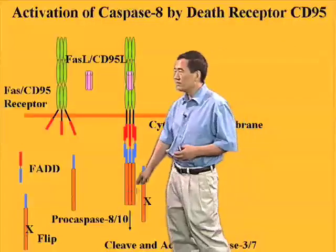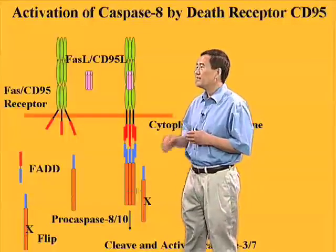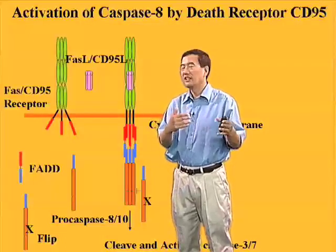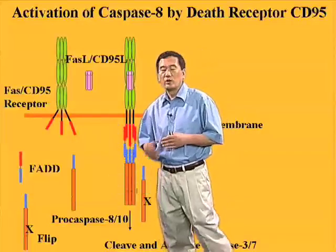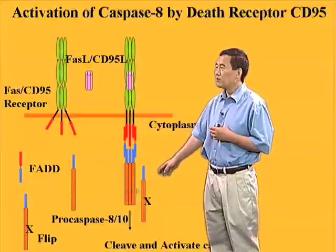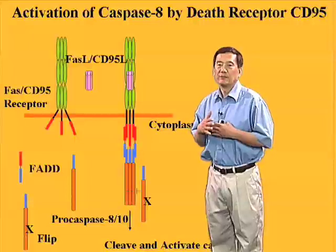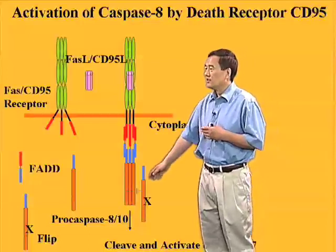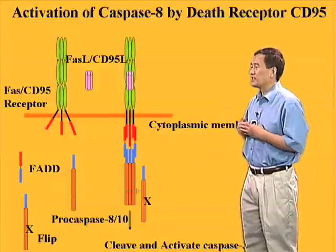There is one interesting regulator of the extrinsic pathway called FLIP. FLIP looks like caspase-8 — it also has a death-effector domain at its N-terminus and is homologous to caspase-8 — but the critical enzymatic site, the cysteine, is missing. So FLIP can be recruited to the DISC, but because it lacks an active site, it cannot function as caspase-8. In cells where FLIP is overexpressed, it can block caspase-8 activation.